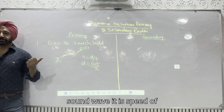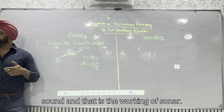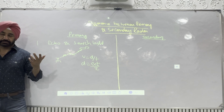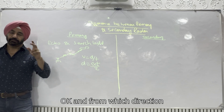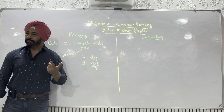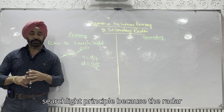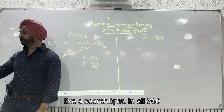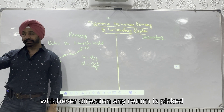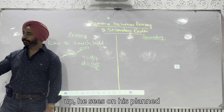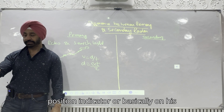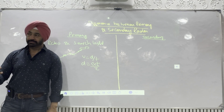For sound waves it is the speed of sound, and that is the working of sonar. From which direction the return is coming, we use the searchlight principle because the radar antenna transmits a narrow beam like a searchlight. In all 360 directions, the antenna is rotating; whichever direction a return is picked up, the controller sees it on his plan position indicator — basically on his screen.